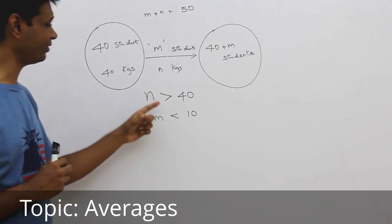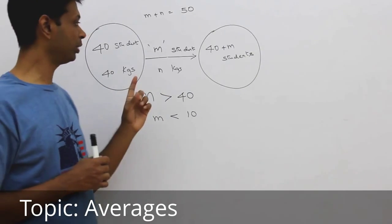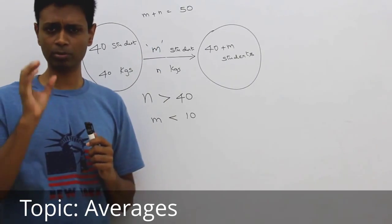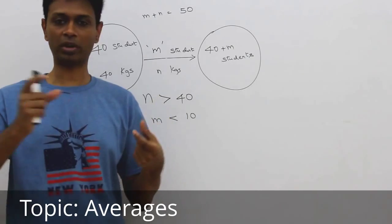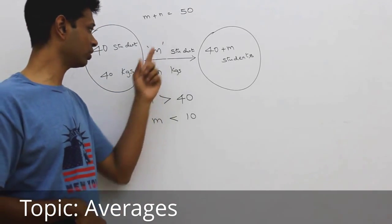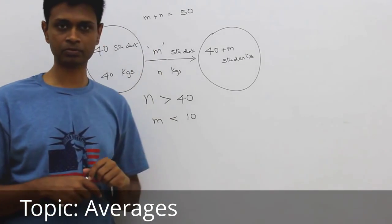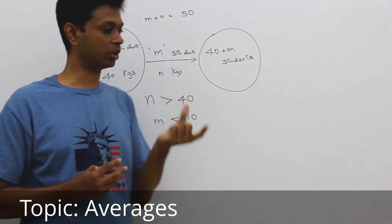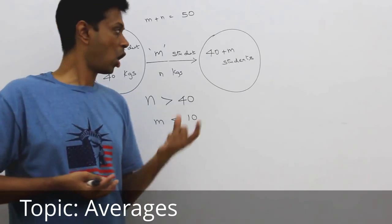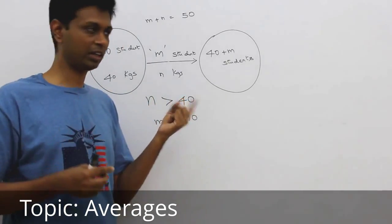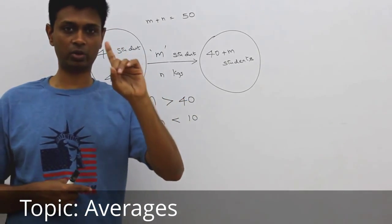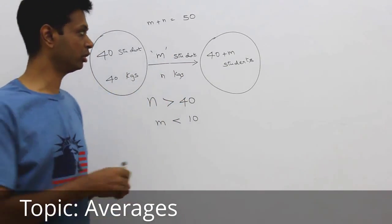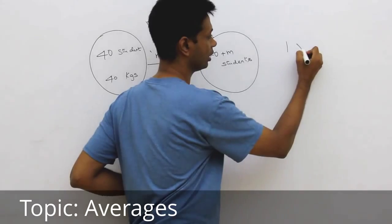Now, suppose n were 41. We bring in 9 students, each weighing 41 kilograms. We are going to break this 41 into two parts: 40 and 1. That would mean 9 students, each weighing 40. Then, the average would not have changed. Because they weighed 41, the average is going to increase. How much is the total going to increase by? Each student brings 1 extra kilogram. There are 9 students. So, the total extra weight brought in is 1 into 9.